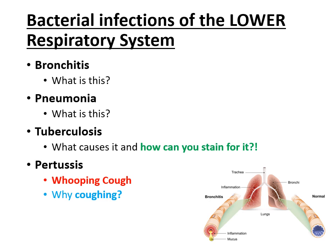Now, the lower respiratory system — sometimes things get worse and patients may end up with lower respiratory infections. When we look at bacterial infections of this area, be very comfortable distinguishing upper versus lower respiratory infections. The first on this list is bronchitis — inflammation of the bronchial tubes. Whereas pneumonia is inflammation of the lungs. The next one is tuberculosis.